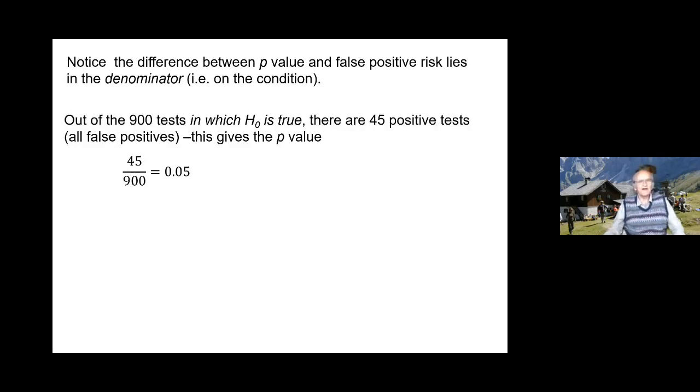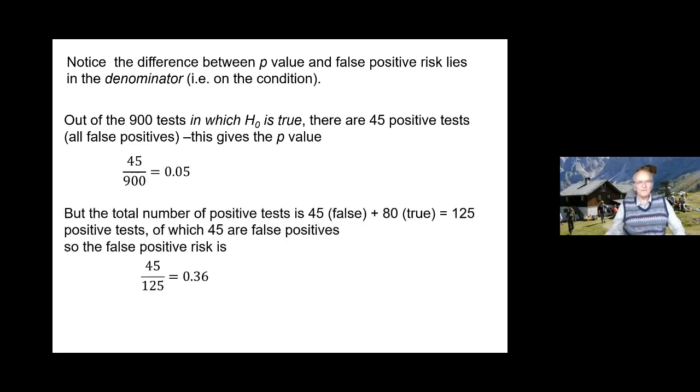In that example, of the 900 tests in which the null hypothesis was true, there were 45 false positives. From the classical point of view, the false positive risk would be 45 over 900, which is 0.05. But that's not what you want. What you want is the total number of false positives divided by the total number of positives, which is 0.36.